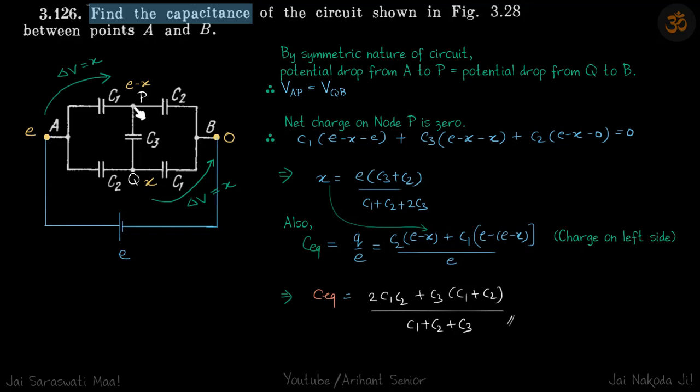Now if we do nodal analysis on point P, we will have only one variable X instead of having X here and Y here. Net charge on node P is 0, which means (E - X - E) times C1 plus (E - X - X) times C3 plus (E - X - 0) times C2 equals 0.